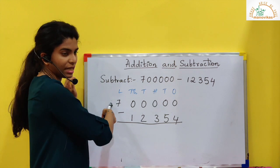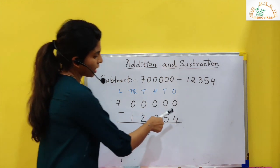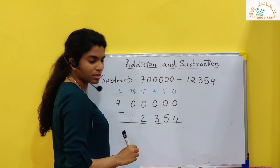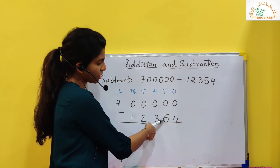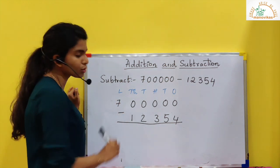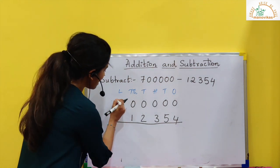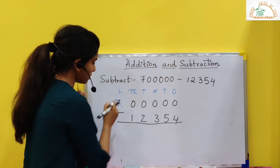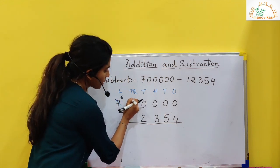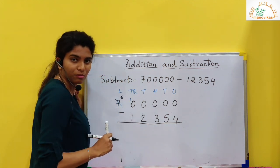Now I have to subtract this number from this number. I cannot subtract 4 from 0 because 4 is greater than 0. Same way, I cannot subtract 5 from 0, 3 from 0, 2 from 0, 1 from 0. So I have to regroup the lakhs. If I regroup, I would have to take out 1 from here — this will become 6. And I will put 1 here. So 10,000 has borrowed 1 from the lakhs place value.